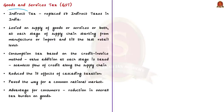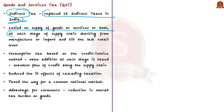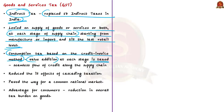GST is an indirect tax that replaced many indirect taxes in India. Prior to GST, central and state governments levied multiple taxes on the same supply chain. The introduction of GST was a significant step in indirect tax reforms, consolidating 17 indirect taxes into a single Goods and Services Tax. GST is levied on supply of goods or services or both at each stage of the supply chain — from manufacture or import until the last retail level. It is a consumption tax based on the credit invoice method, taxing only value addition at each stage, thereby reducing double taxation or cascading taxation and helping ensure a common national market.